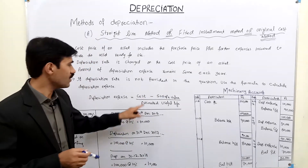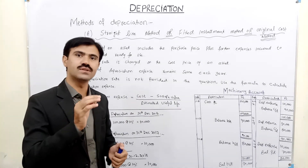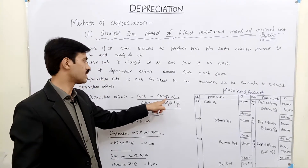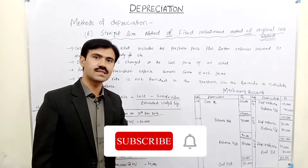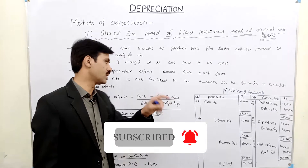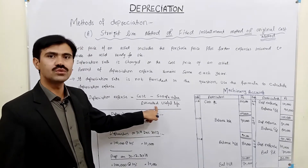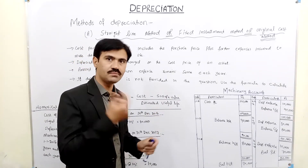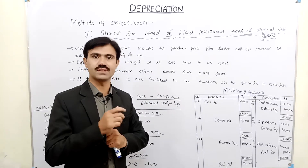Cost price is the initial value at which the asset is purchased or recorded. Scrap value is the estimated amount the asset will be sold for when its useful life is finished. Useful life is the time period during which the asset provides economic benefit to the business.